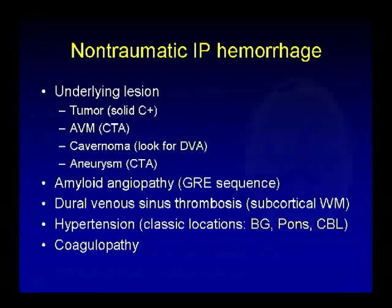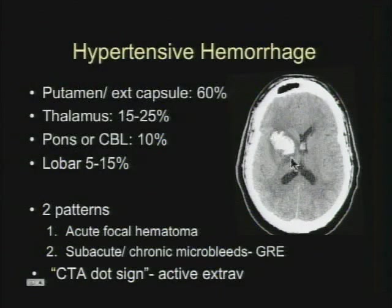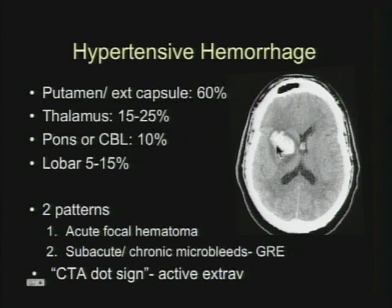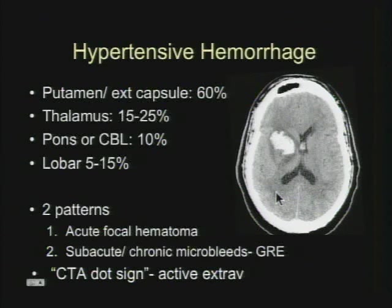Here's an example of a hypertensive hemorrhage in a classic location in the putamen — but remember again that 5% to 15% can be lobar. You'll see two patterns: one is an acute focal hematoma, but you can also see subacute chronic microbleeds on the gradient sequence. If you see a hematoma, the gradient sequence can be a hint to the underlying etiology. Remember to look for active extravasation on CTA in your post-contrast.